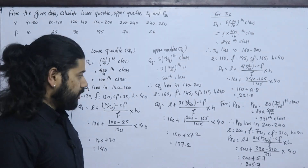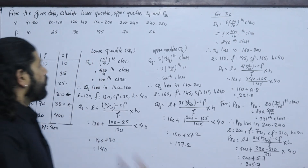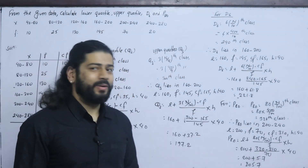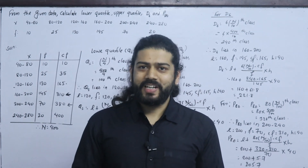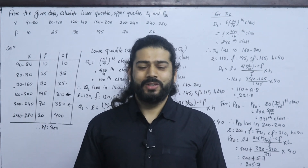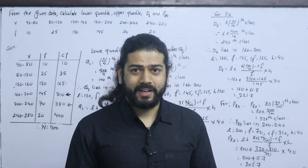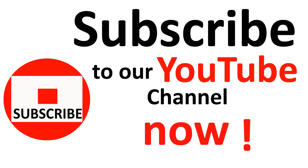So we have solved the lower quartile Q1, upper quartile Q3, sixth decile D6, and 80th percentile P80 for this continuous series. In the next class, we will solve an important exam-oriented percentile question. Check the description for the link. Thank you.